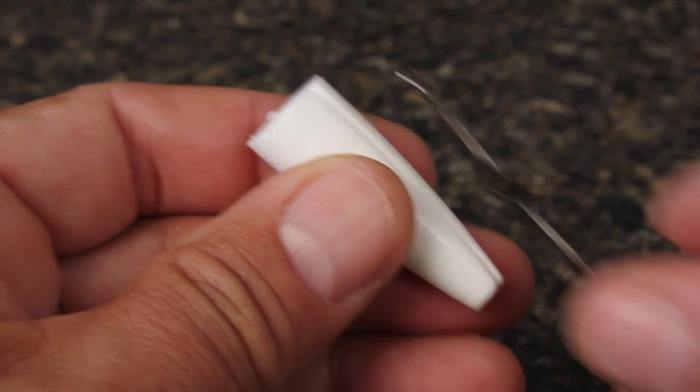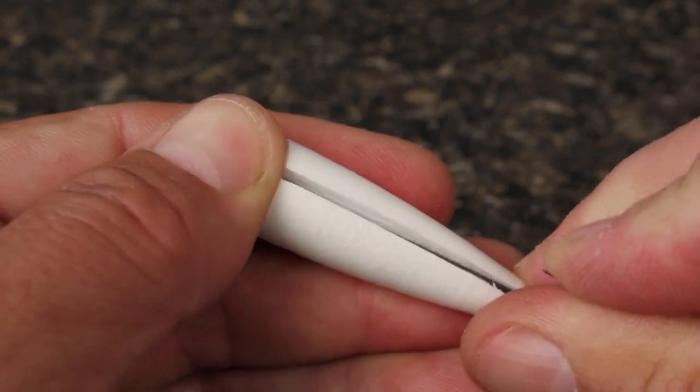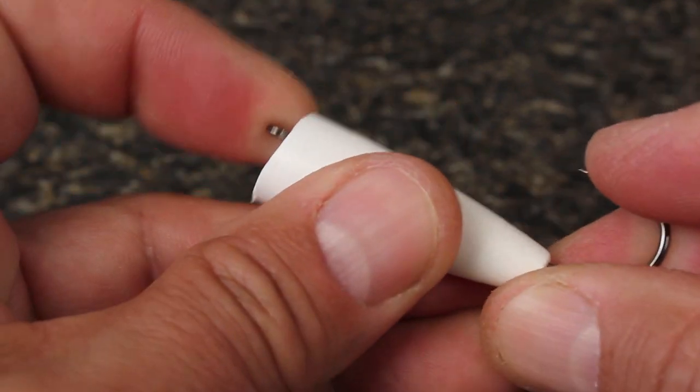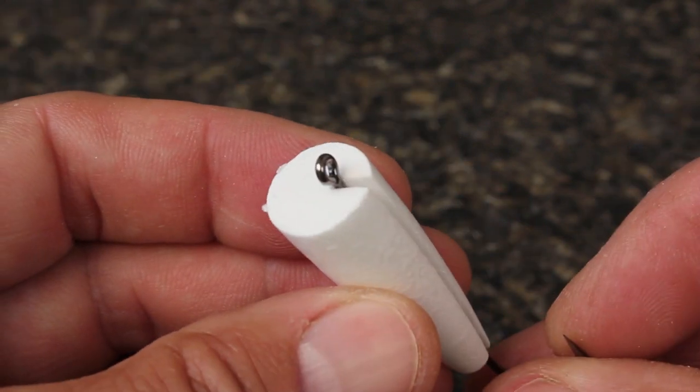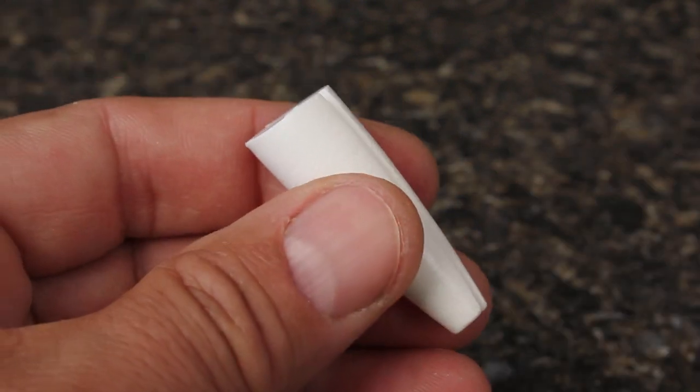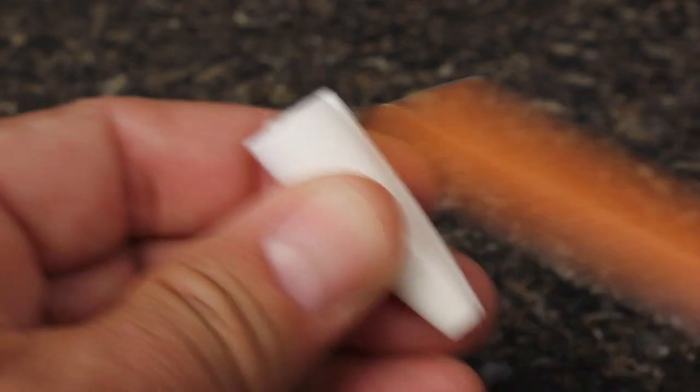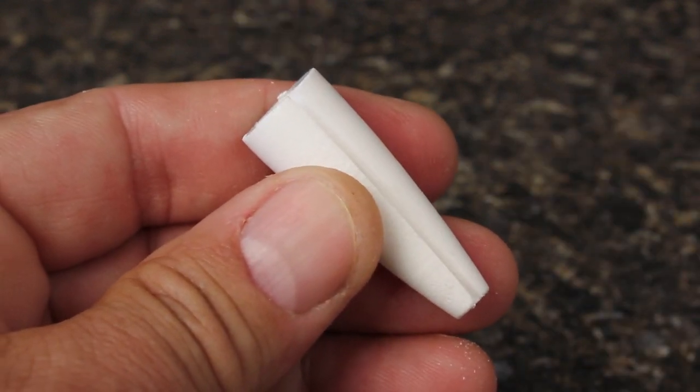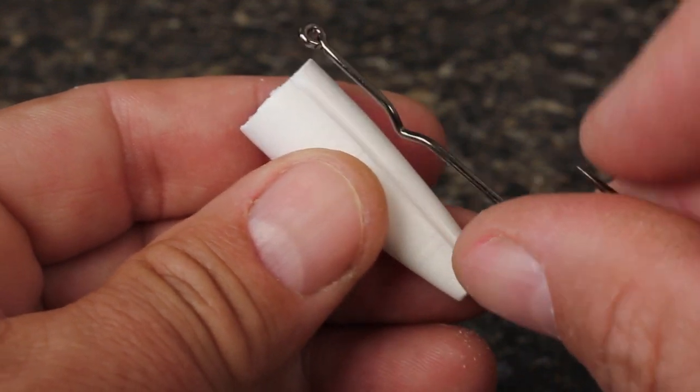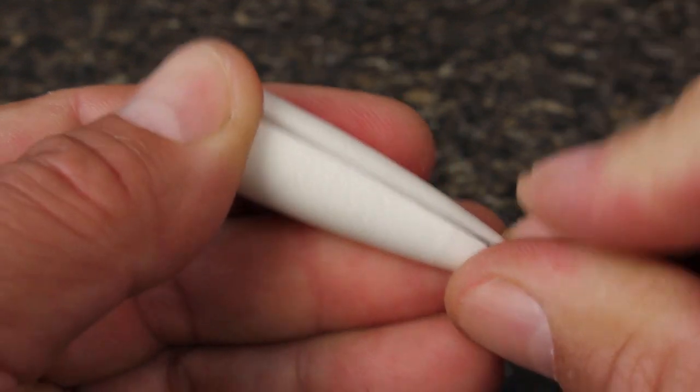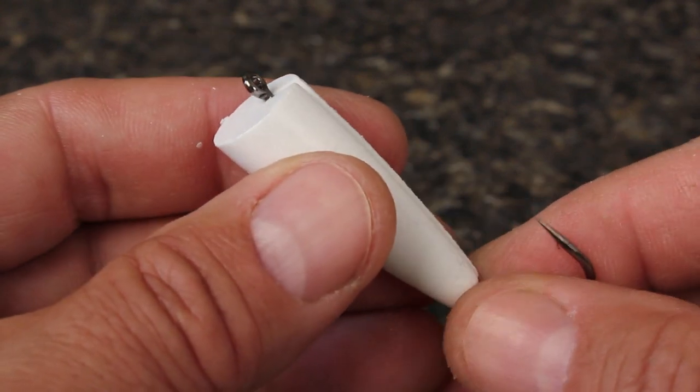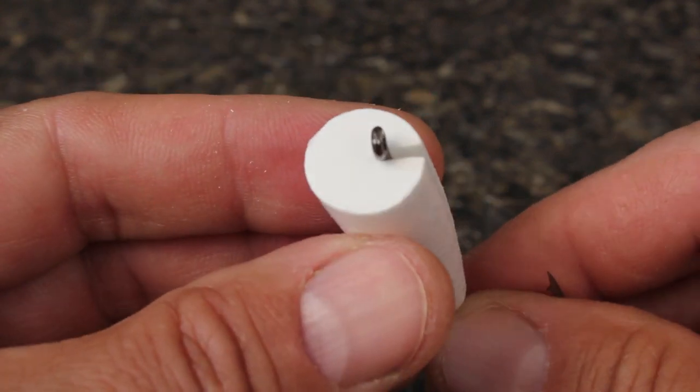A plain old emery board works great for clearing out the channel and allowing the hook to lay perfectly in place. Once you have things looking right, place the hook in your vise.